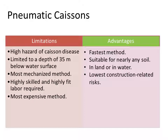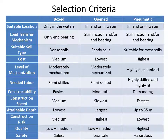This selection criteria table provides a very useful comparison between the box, open, and pneumatic caissons, summarizing the key points discussed during the presentation.